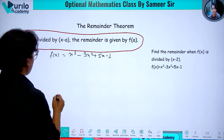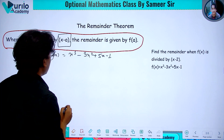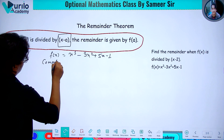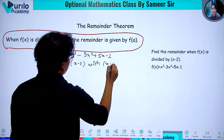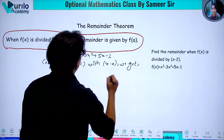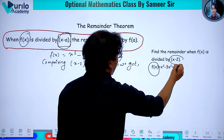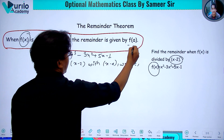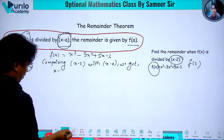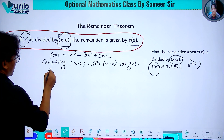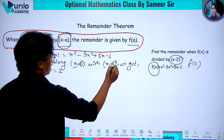Comparing x minus 2 with x minus a, we get a equals 2. When f of x is divided by (x minus a), the remainder is f of a, so here a equals 2.